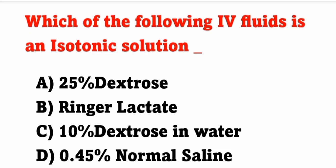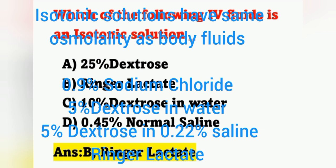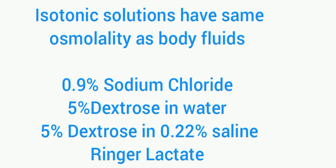First question: which of the following IV fluids is an isotonic solution? Option A: 20% dextrose. Option B: Ringer's lactate. Option C: 10% dextrose in water. Option D: 0.45% normal saline. The correct answer is Ringer's lactate. Option B is the correct answer.